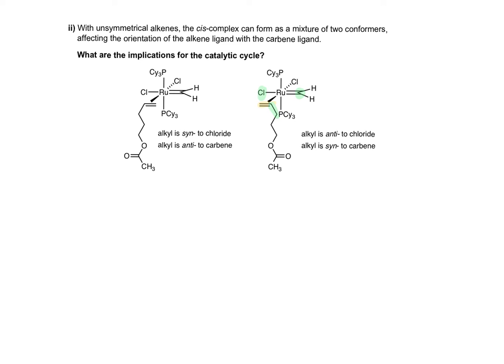Consider the cycloaddition mechanism, which gives a metallocyclobutane. From the conformer on the right, the metallocyclobutane has the alkyl group at a position most distant from the ruthenium with its bulky ligands.